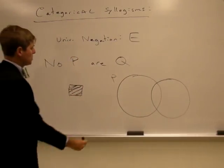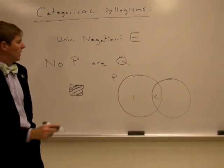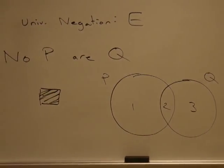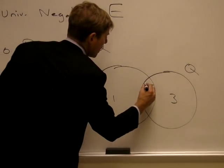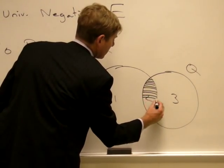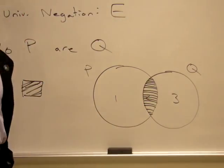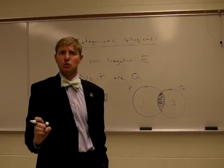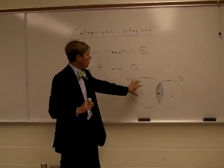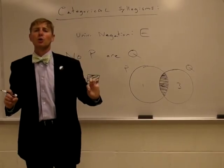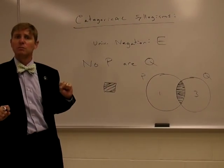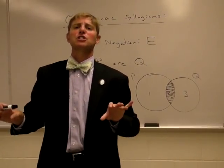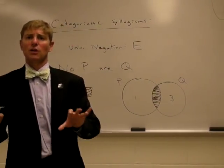This circle represents P. Sector two represents things that are both P and Q. Sector three is Q but not P. In order to diagram 'No P are Q,' we shade in the middle section. The convention is we shade the area in which there are no members, not the area in which there are members. This says there are no P's that are Q, and thus also no Q's that are P's — for example, 'No wallabies are giraffes.'